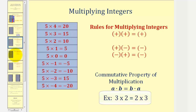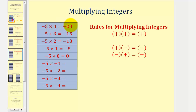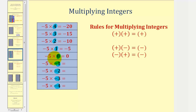We'll try to discover that rule by starting with what we know — a negative times a positive is negative. We'll keep the first factor negative five and decrease the second factor by one, where the second factor will start at four and decrease until it reaches negative four. The second factors are four, three, two, one, zero, negative one, negative two, negative three, and negative four. We already know these first five products: negative five times four equals negative 20, times three equals negative 15, times two equals negative 10, times one equals negative five, and times zero equals zero.